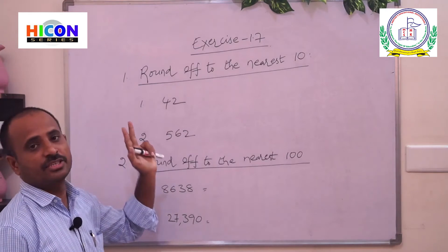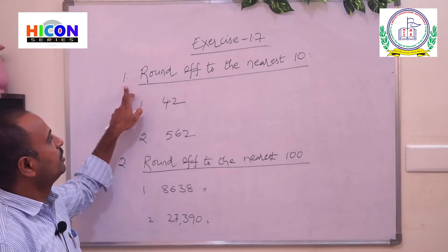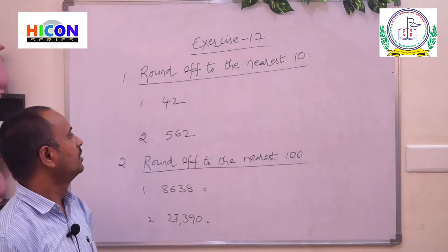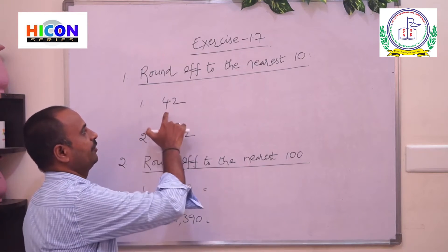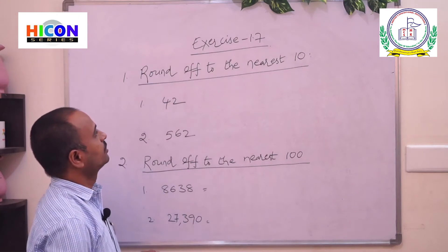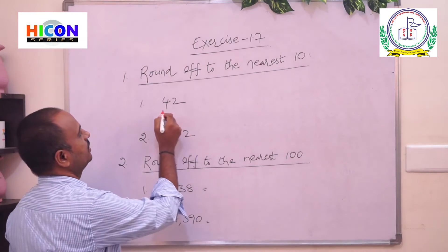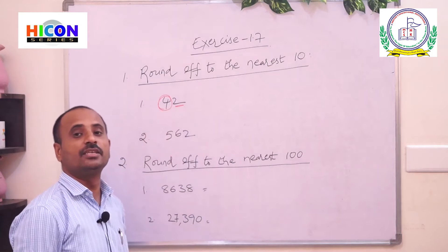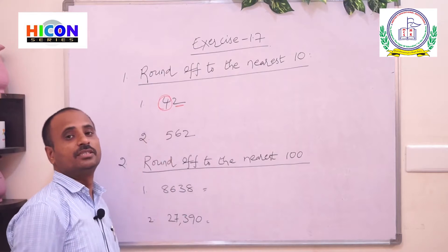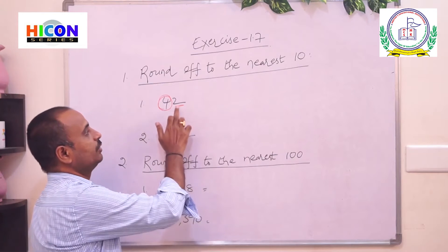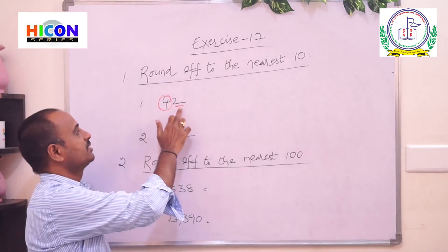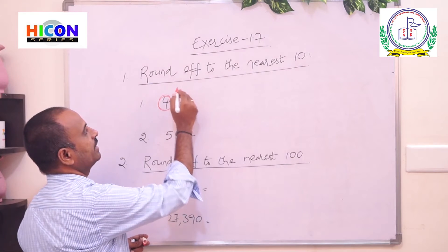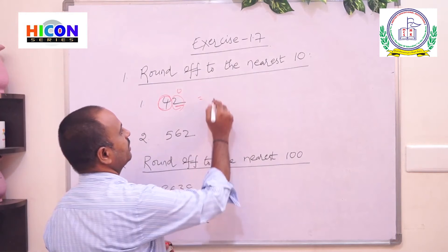Exercise 1.7: let us practice some problems on rounding off. The first problem is round off to the nearest ten. Some numbers are given and we have to round them off to the nearest ten. The first number is 42. Nearest tens: identify the digit in the tens place, which is 4, and check the next digit. The next digit is 2. If the next digit is less than 5, keep the same tens. Here 2 is less than 5, so keep the same tens — that is 4 — and keep 0 for the remaining digits. The answer is 40.